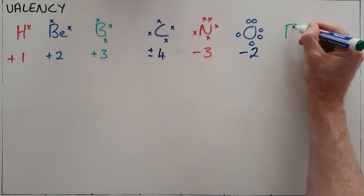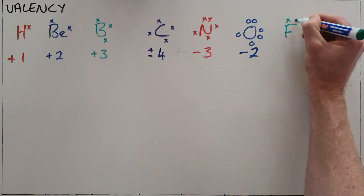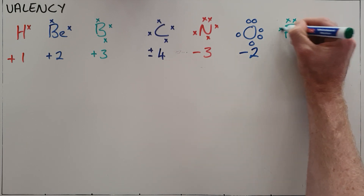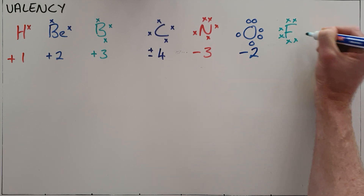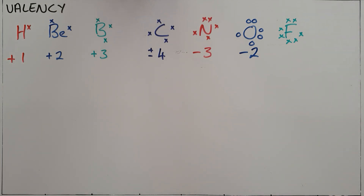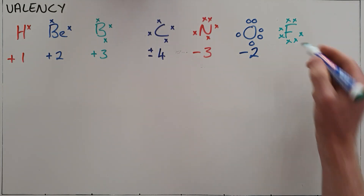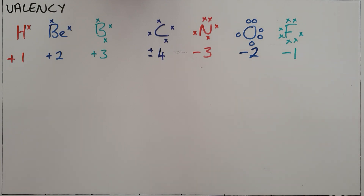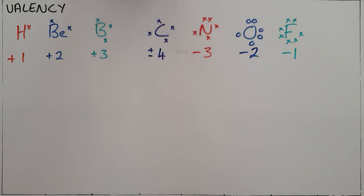Elements in group 17, or group seven of the periodic table, have seven valence electrons and therefore would only need to gain one electron in order to obtain a full valence shell. They therefore have a charge of negative one, which is their valency as well. The noble gases already have full valence shells and therefore do not form bonds, so we say that they have a valency of zero.